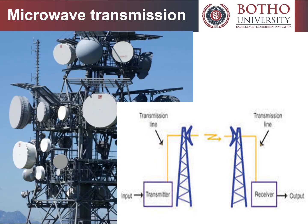Communication satellites, which transferred data between ground stations by microwaves, took over much long-distance traffic in the 1960s. In recent years there has been an explosive increase in the use of the microwave spectrum by new telecommunication technologies such as wireless networks and direct broadcast satellites, which broadcast television and radio directly into consumers' homes.